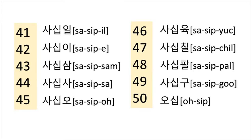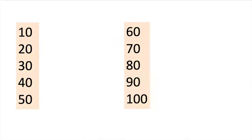And 50 — 5 and then 10. So 50. So far we counted until 50. You already saw the patterns. Once you get the pattern and memorize from 0 to 10, the counting with Sino-Korean numbers is super easy. You can keep counting from 51 to 99, and then you go 100.